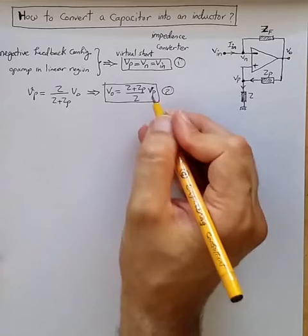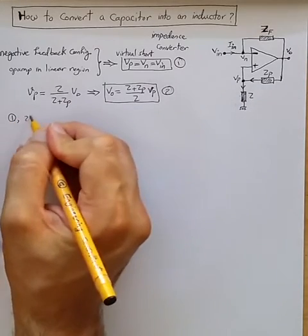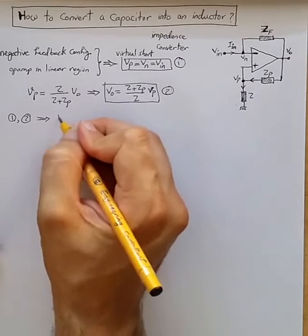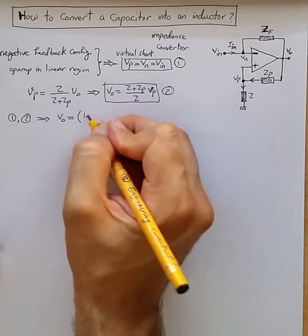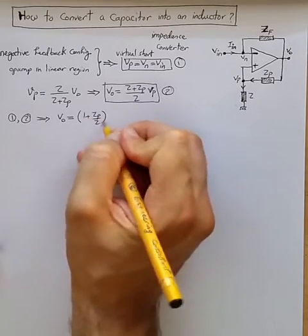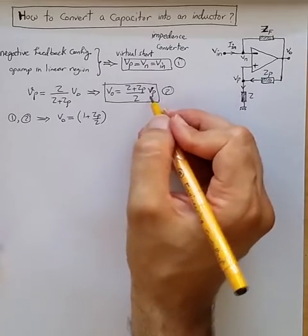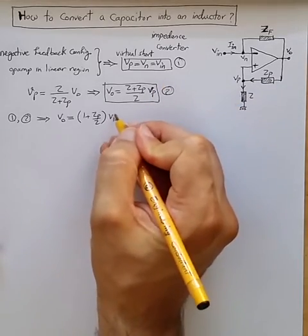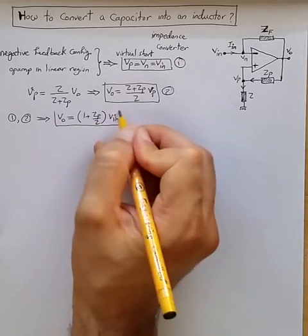Now we can use one and two. So combining one and two we can get Vout is one plus ZP divided by Z, just rewriting this, and VP is one plus ZP divided by Z. So we will replace VP with VIN. That is number three.